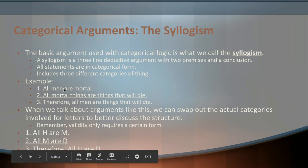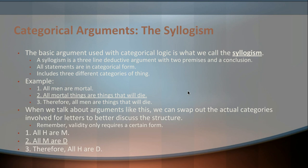Keeping these three rules in mind, let's look at the example: 'All men are mortal. All mortal things are things that will die. Therefore, all men are things that will die.' First off, it's obviously a three-line argument that we've standardized — numbered the lines, laid it out, translated it into a formal structure. All the statements are in categorical form — specifically, we're dealing with nothing but A statements. And we're dealing with three different categories: men, mortal things, and things that will die. So we can say it's definitely a categorical syllogism.